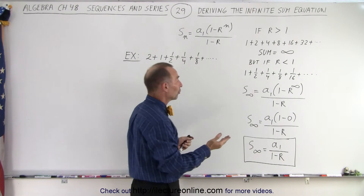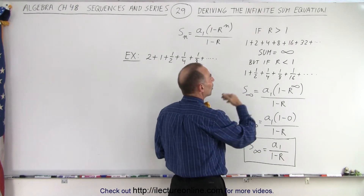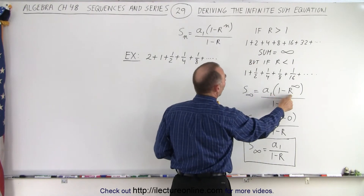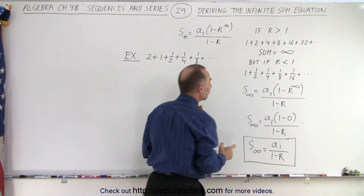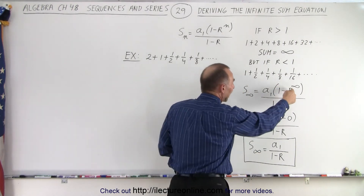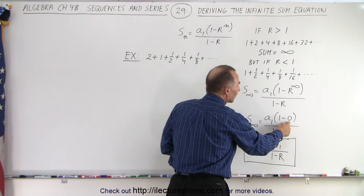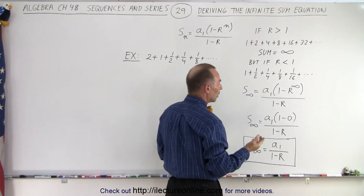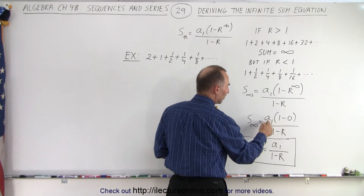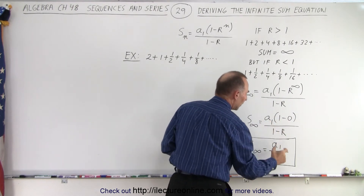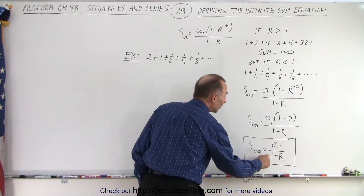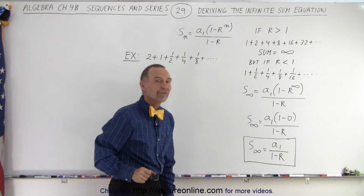The equation to find the infinite sum becomes: a-sub-1 times (1 minus r to the infinity power), divided by (1 minus r). But if r is less than 1, then r to the infinity power becomes 0. So (1 minus 0) is simply 1, meaning 1 times a-sub-1 is just a-sub-1, and the denominator is (1 minus r). It simply becomes the first term divided by (1 minus the common ratio).